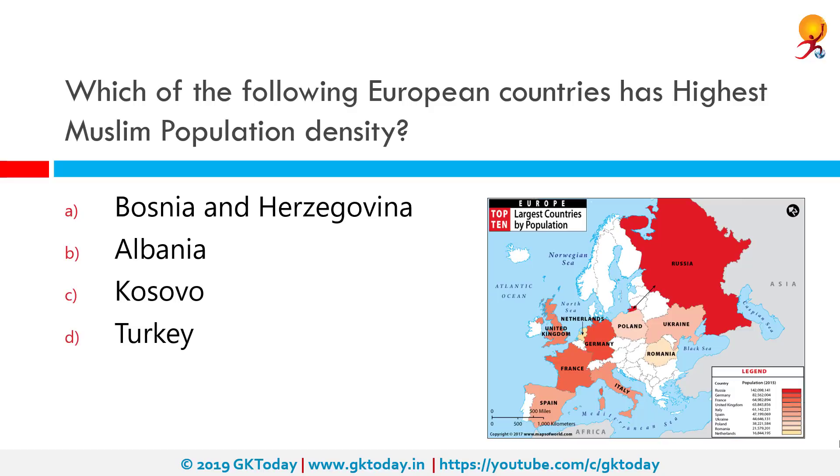Which of the following European countries has the highest Muslim population density? Correct answer is Turkey.